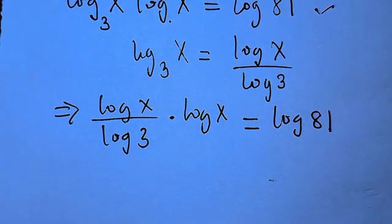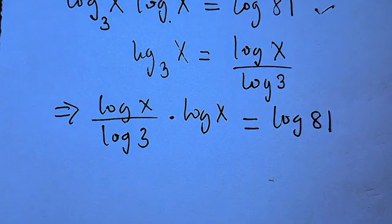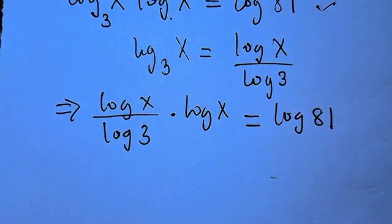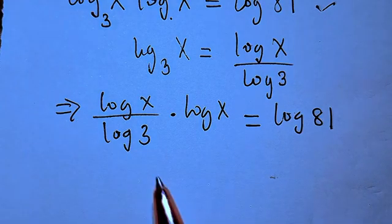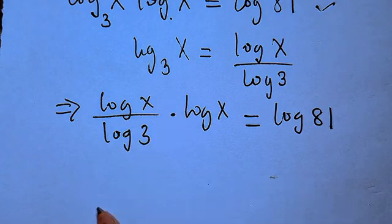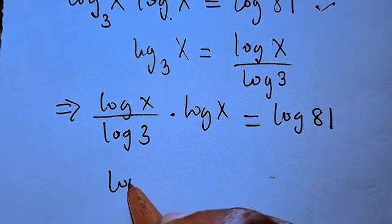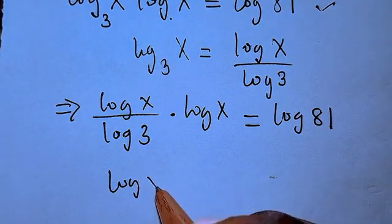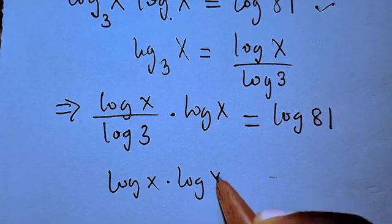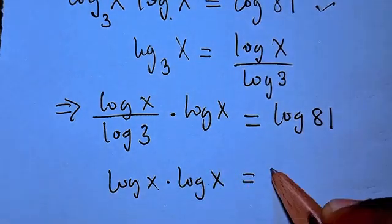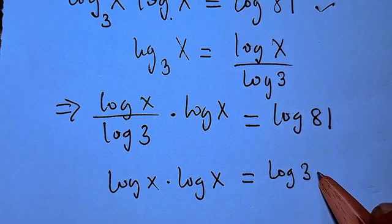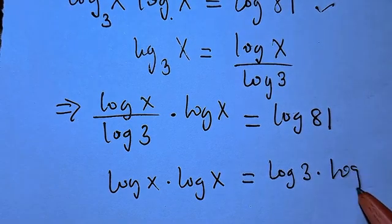We have a fraction, so we want to clear it out. We multiply both sides by log 3. The log 3 on the left cancels, giving us: log x multiplied by log x equals log 3 multiplied by log 81.